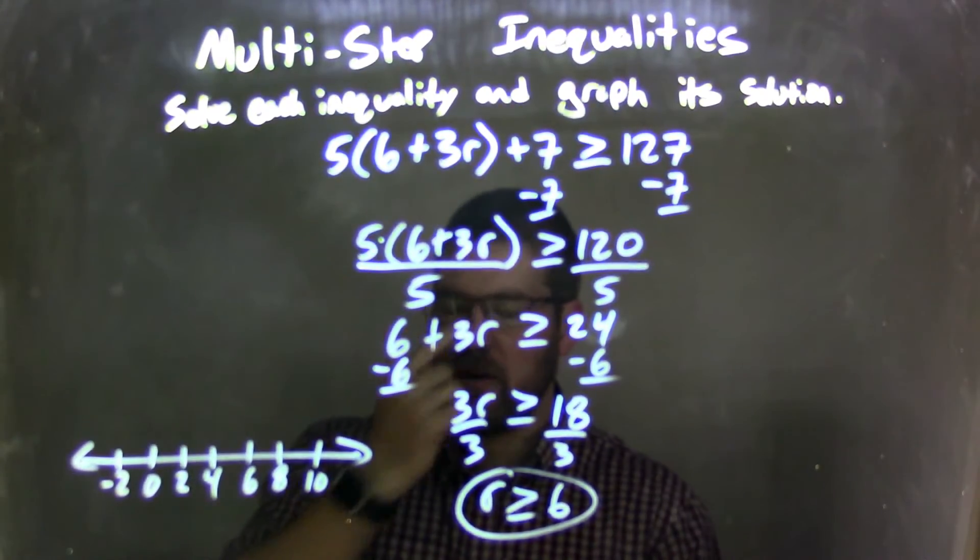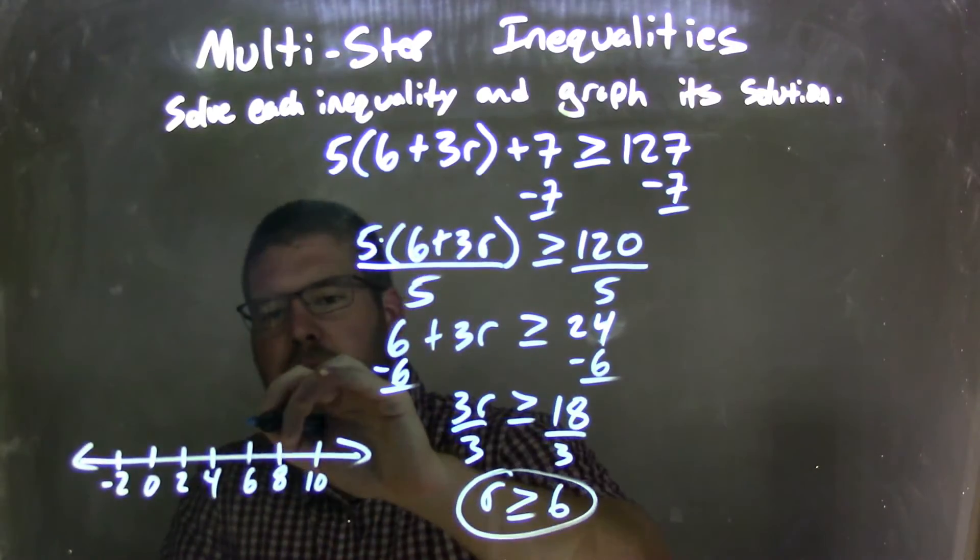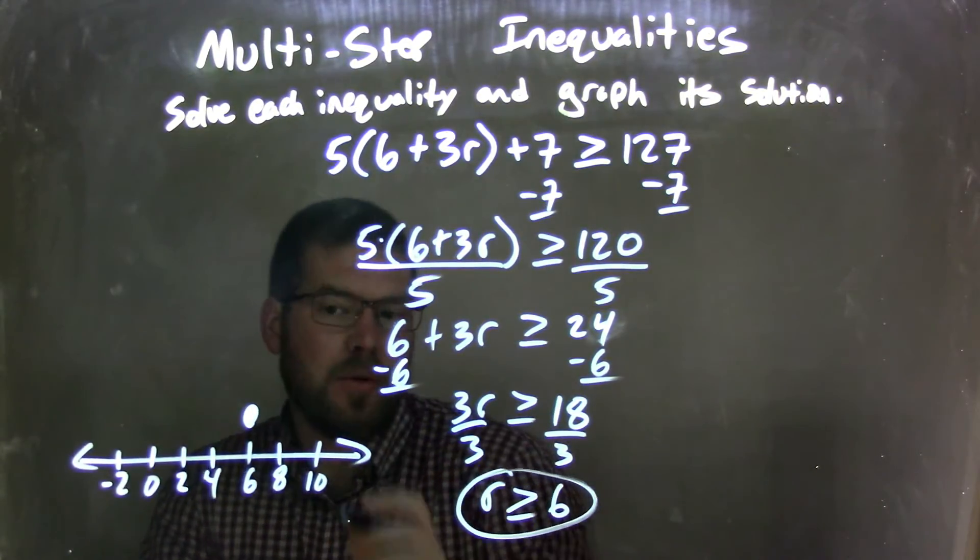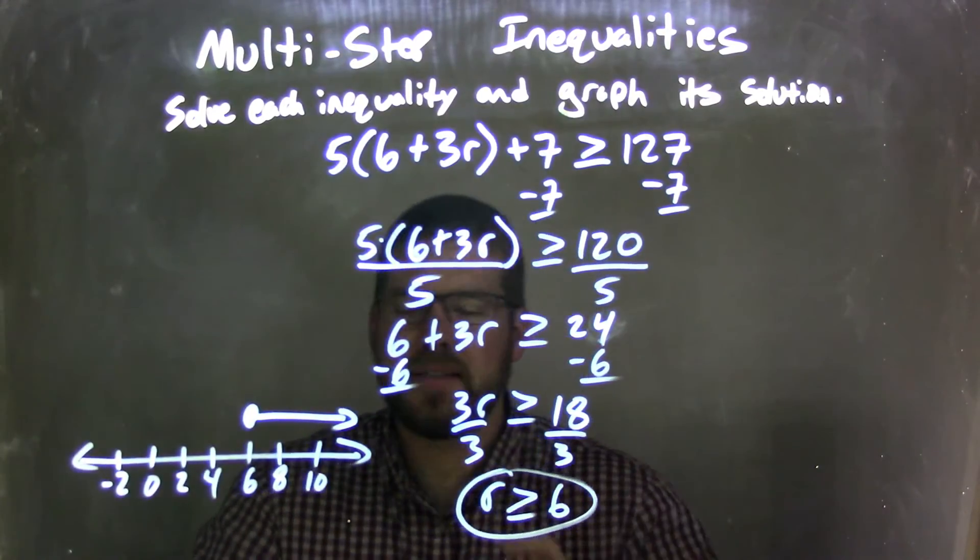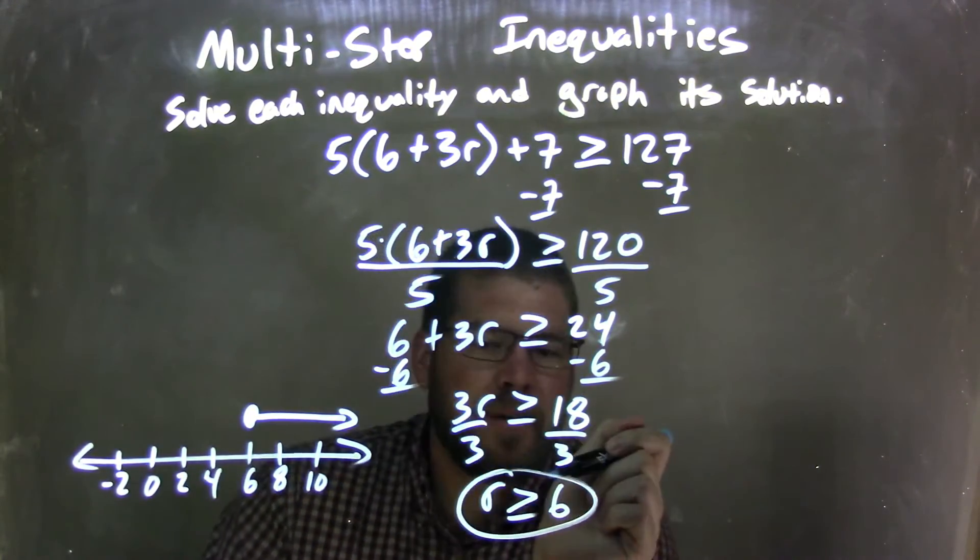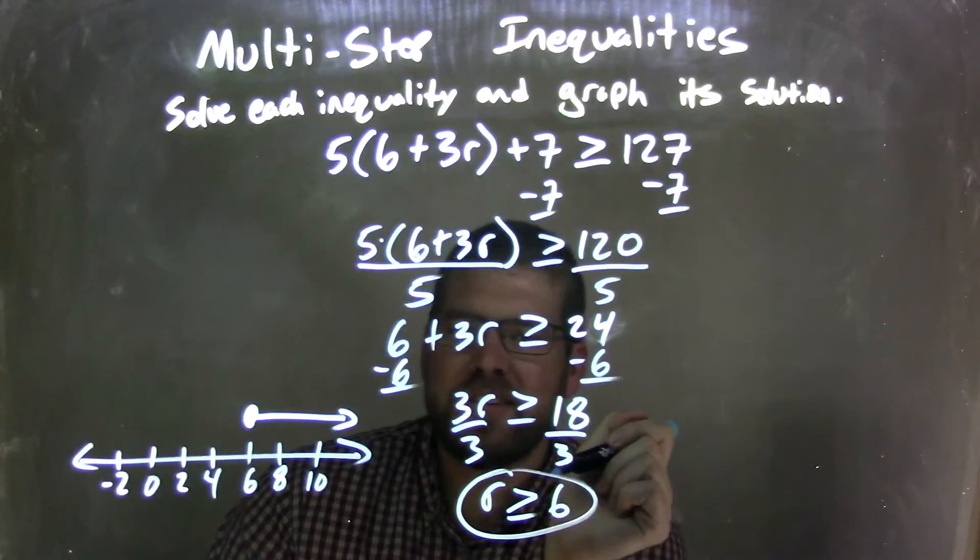So we have said R is greater than or equal to a positive 6, so we have a closed circle at 6 because it can equal that. And I'm going to show you to the right because R is greater than 6. So now this graph matches my final answer, which is R is greater than or equal to 6.